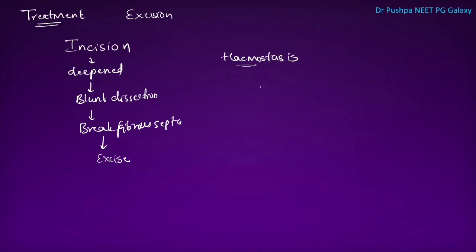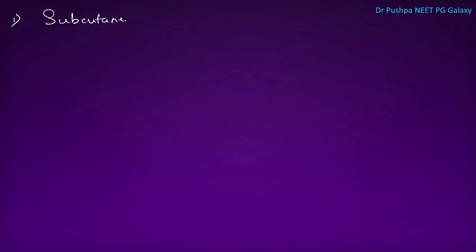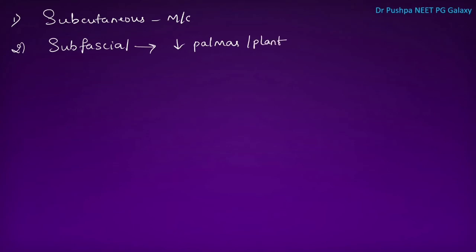There are different types of lipoma based on anatomical location. Subcutaneous lipoma, present below the skin, is the most common. Subfascial lipoma is present under the palmar or plantar fascia or beneath any aponeurosis — treatment requires urgent excision.